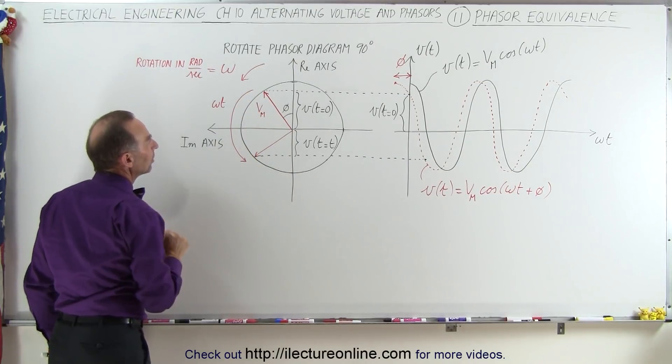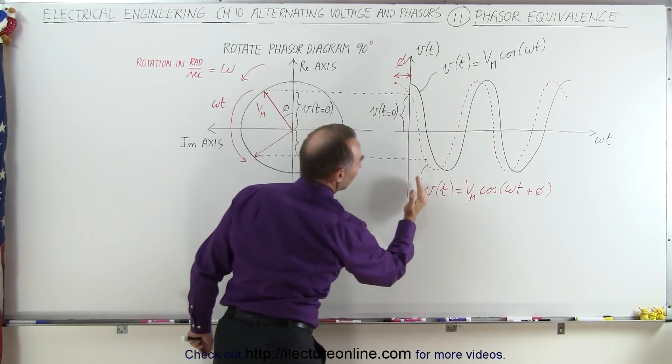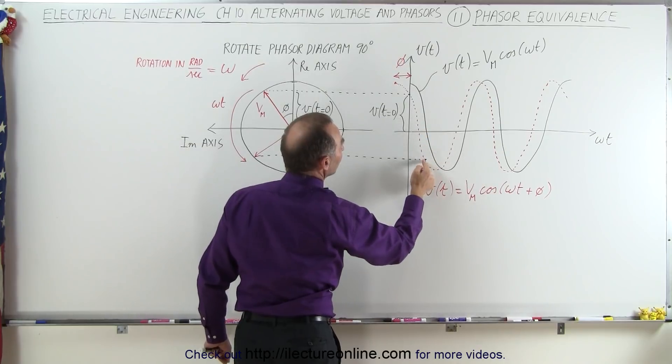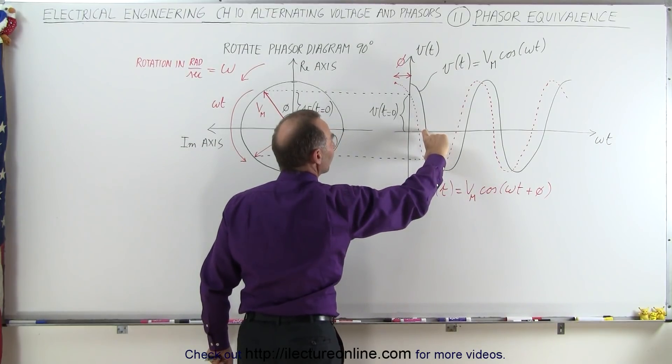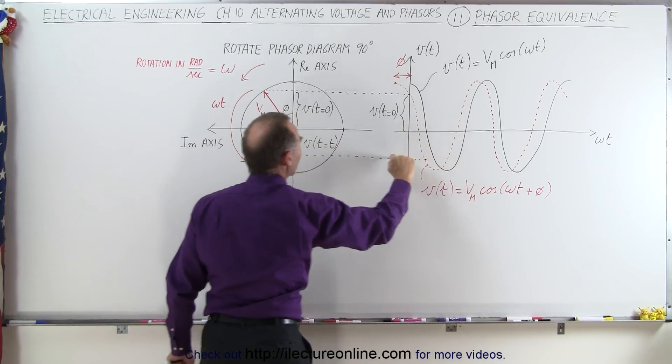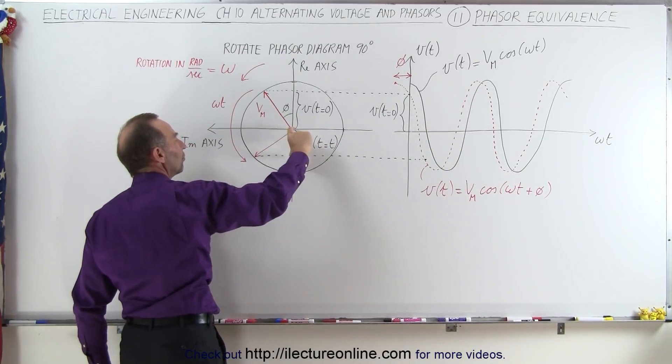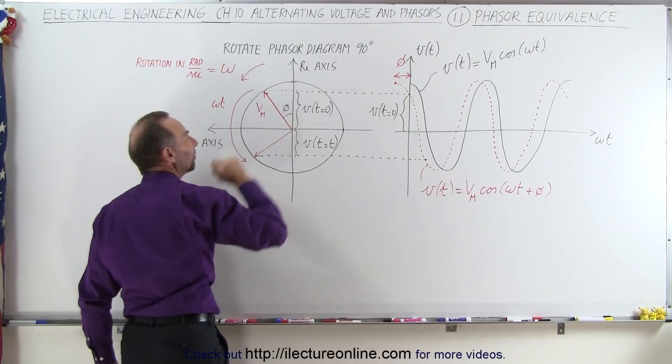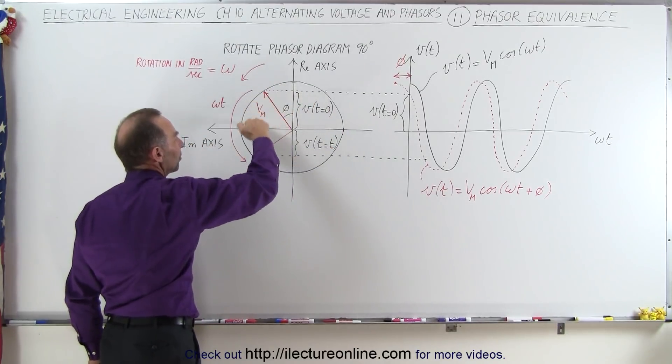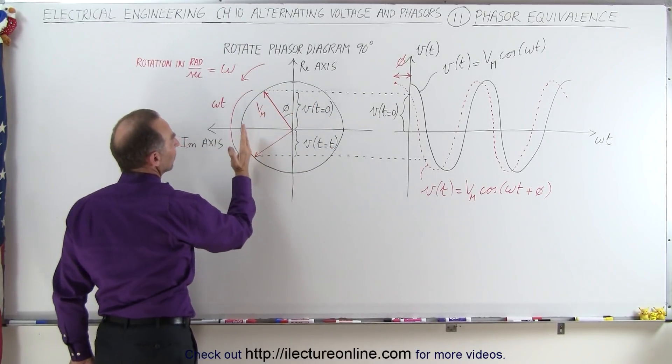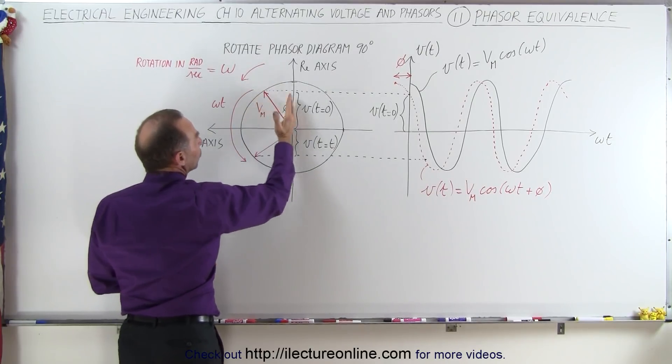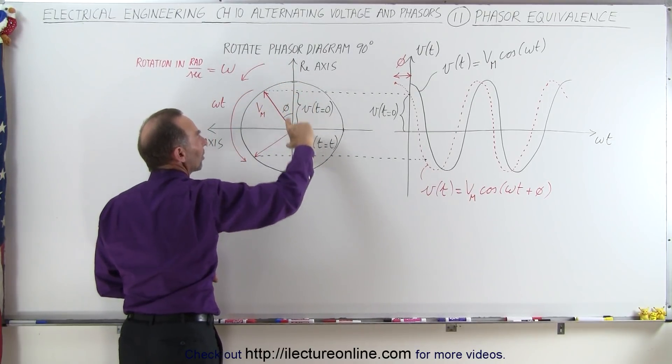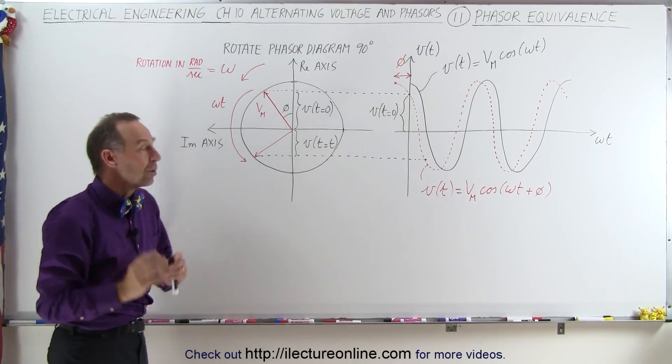So sometime later, we're now at this location when this much time has elapsed, and this would be the voltage at time equals t. We come across here, and we see that this is the voltage at time equals t on the phasor diagram.